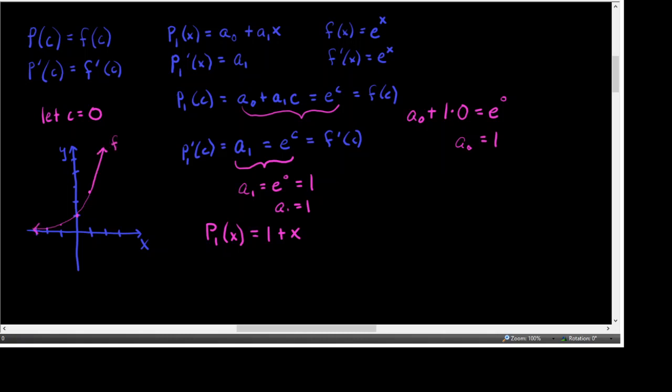If I graph this polynomial function, that's the graph of a line with a y-intercept of 1, which it should have, because when X is 0 we wanted them to share that point in common. Then we'll use slope, which is 1, to go up 1 over 1 and draw that line. Since that's a line, it is a tangent line to that curve at that point. This is something we could have already done even back in Calculus 1 — finding the equation of the tangent line. This goes further than that.